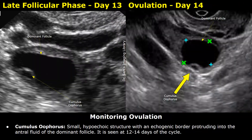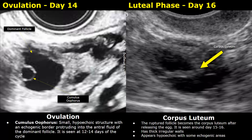These are images of day thirteen and day fourteen. Day fourteen is usually when ovulation occurs. On days twelve to fourteen, a structure known as the cumulus oophorus appears inside the dominant follicle — this is the structure that contains the egg. It appears as a small hypoechoic structure with an echogenic border protruding into the antral fluid of the dominant follicle. This is another image showing a cumulus oophorus inside the dominant follicle, seen at day fourteen.